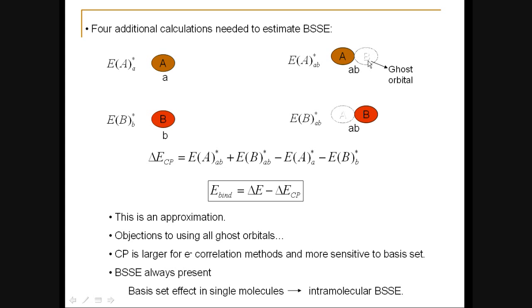Only the orbitals of B are there. And we call these ghost orbitals, because there is no molecule. Then we do the same thing for B. We include molecule B and the combined basis set AB. That is, we include the basis set of A, but we do not include molecule A itself.